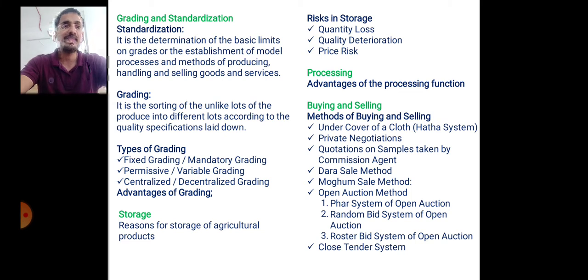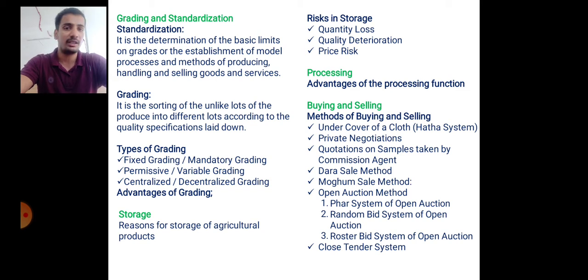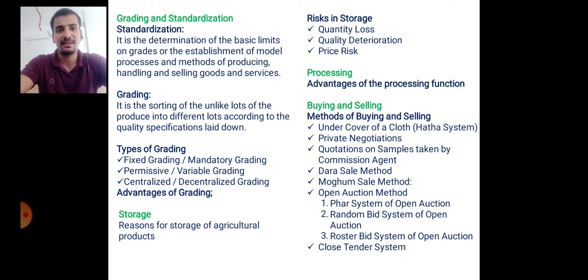Agricultural products are seasonal and perishable, so their keeping quality or keeping period is very short. If we want to store agricultural products, we need storage facilities. The risks in storage are: quantity loss, quality deterioration, and price risk. These are the three main risks in storage.